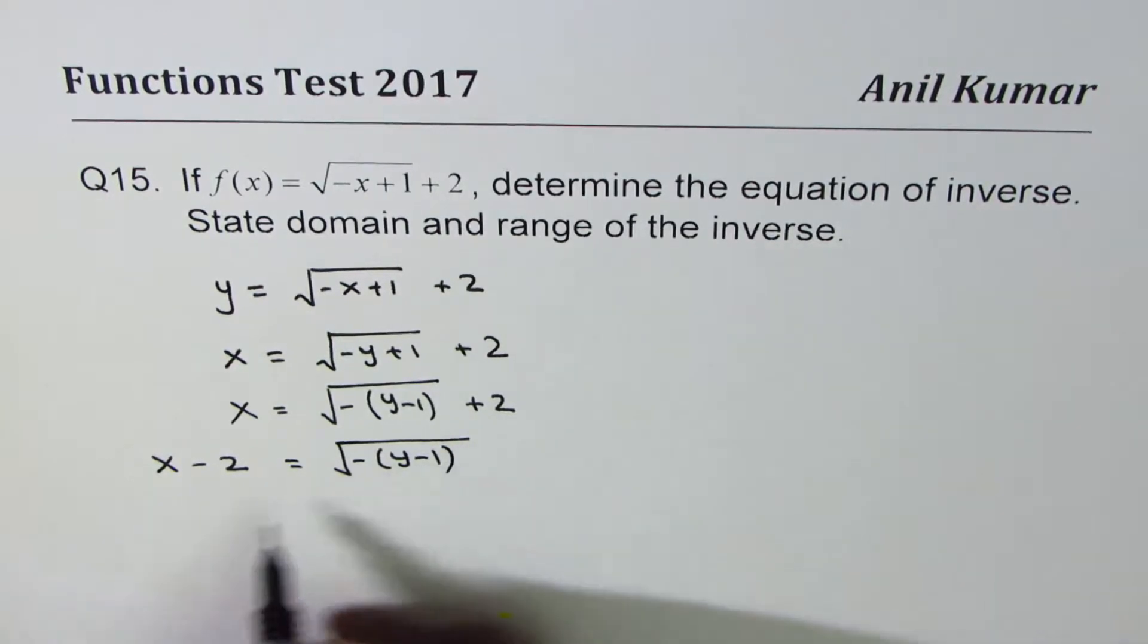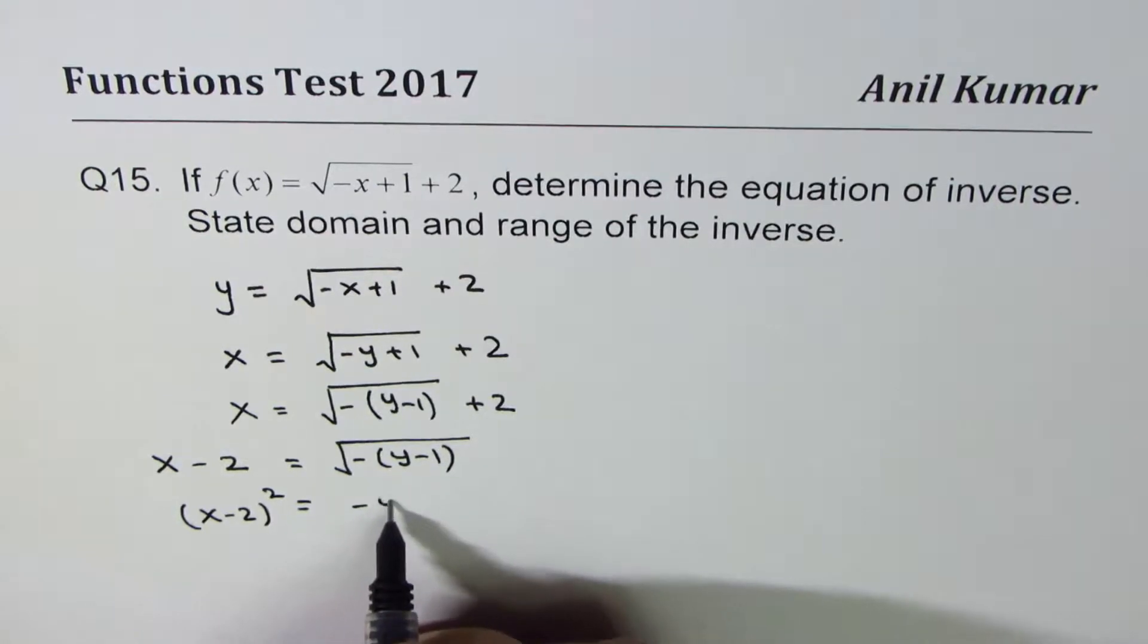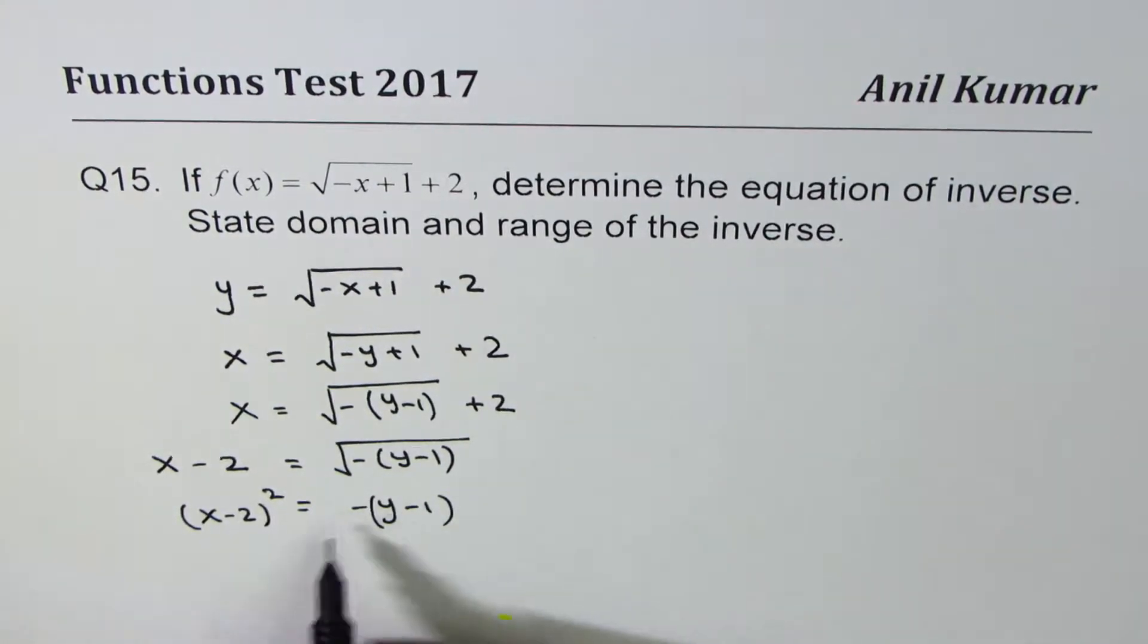Now we'll square both sides. x minus 2 whole square equals minus y minus 1. Now that minus, we can write this as minus x minus 2 whole square equals y minus 1. And from here, we can write this as minus x minus 2 whole square plus 1 equals y.